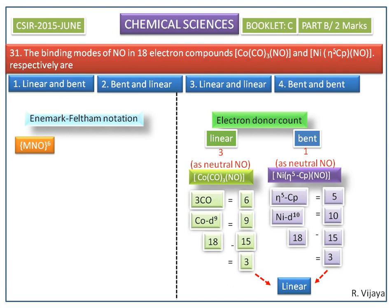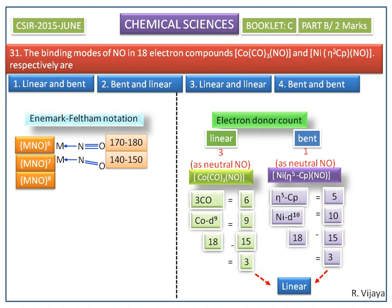The Enemark-Feltham notation is written within curly brackets as {M(NO)}^n. If n equals 6, it is called a linear structure, with an M-N-O angle of 170 to 180 degrees. If n equals 8, it gives a bent structure with an angle of 120 degrees. If n equals 7, the angle is intermediate, between 120 and 180 degrees.